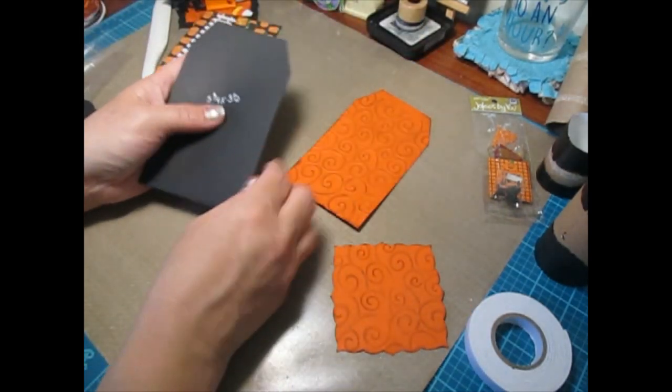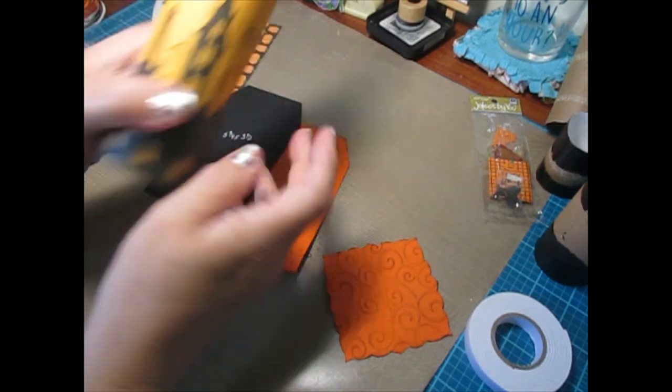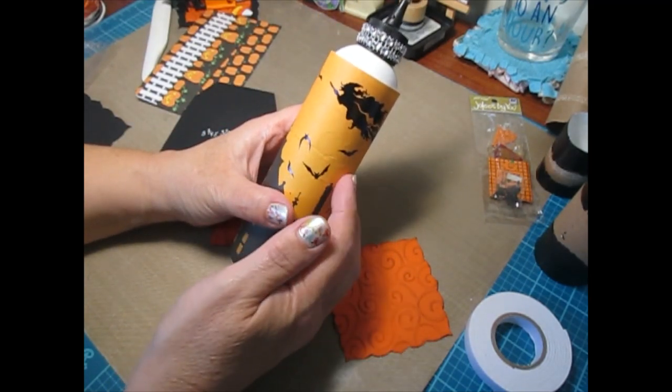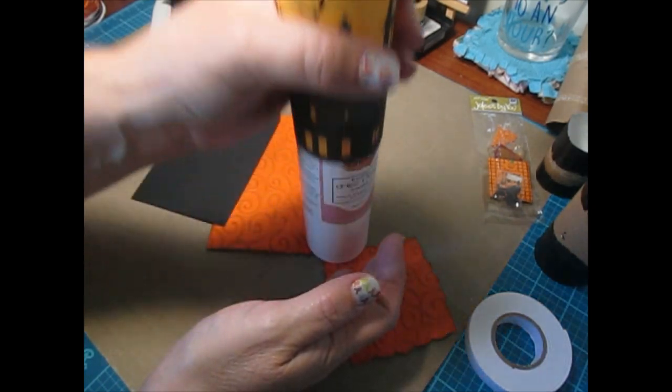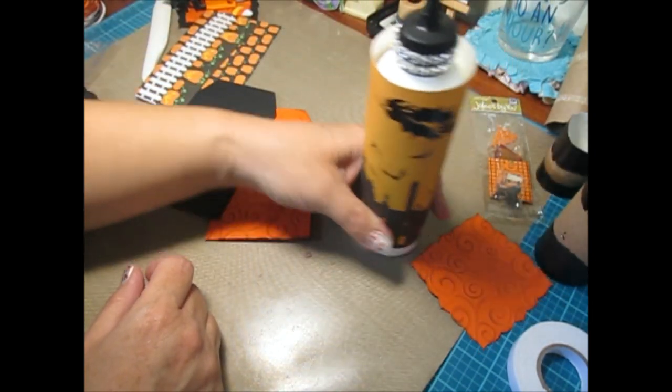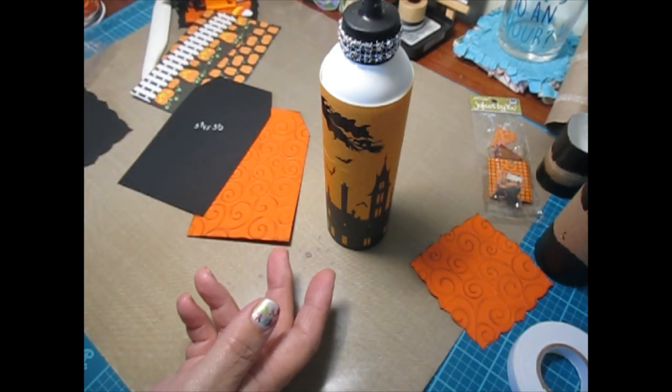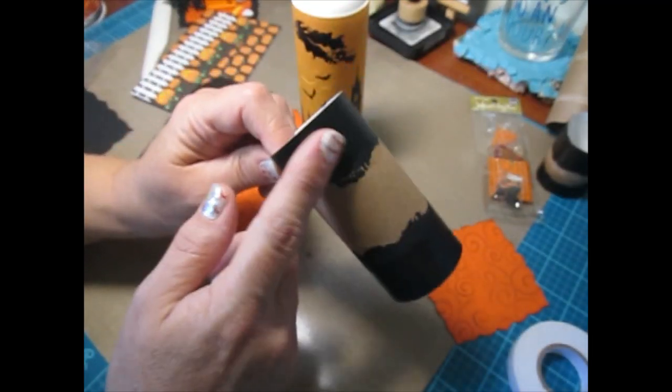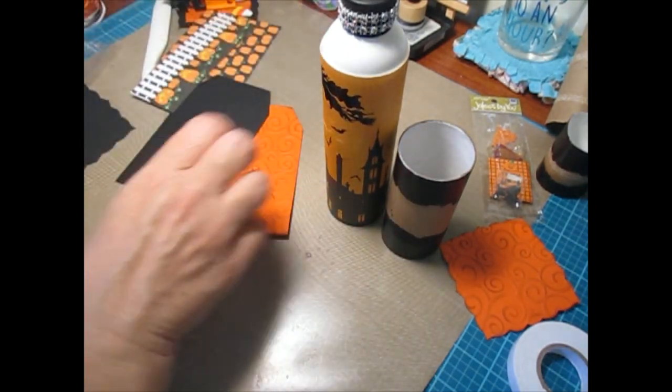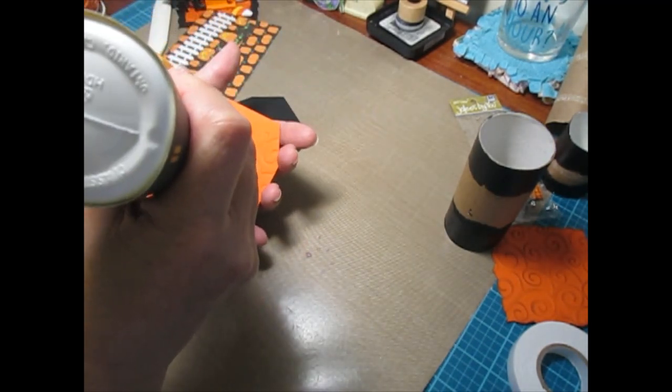Set that aside. I'm going to put our tag together. By the way, somebody had questioned me - how did you decorate your glue bottle? I actually make little sleeves for these, just for my designer paper. Then I can take them off and just store them.